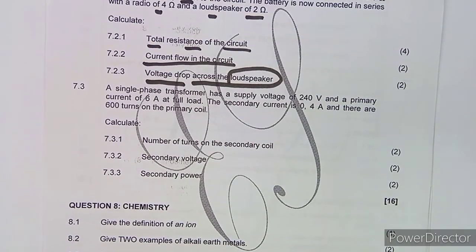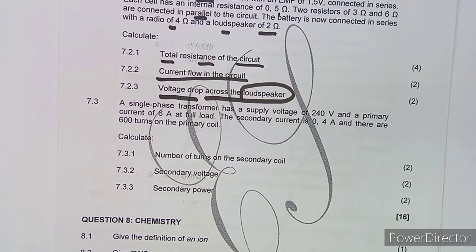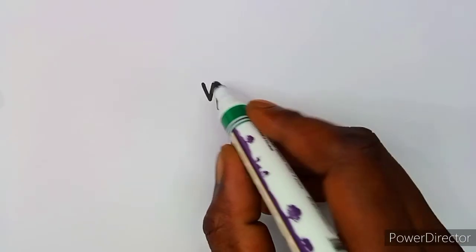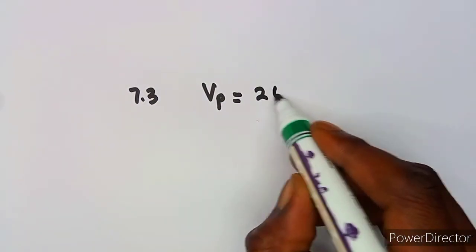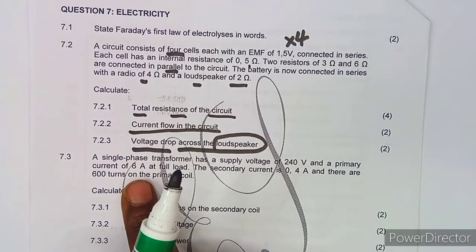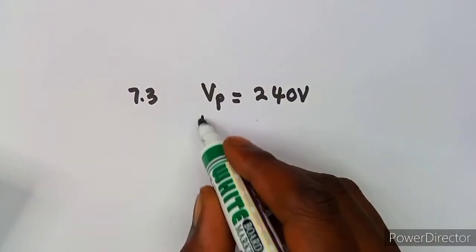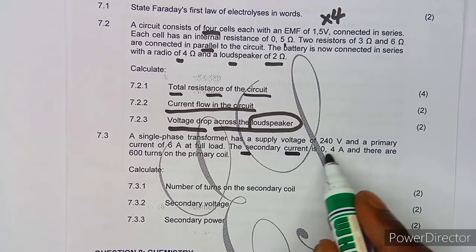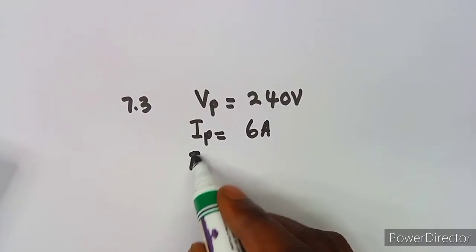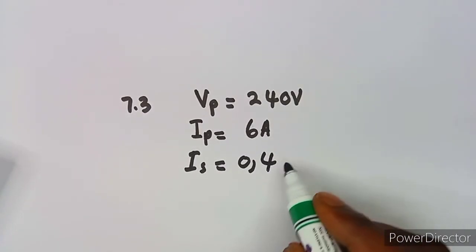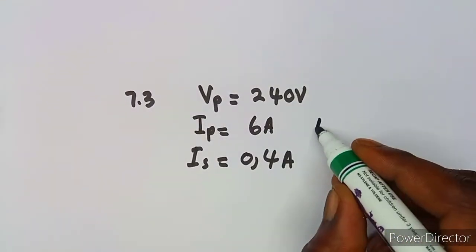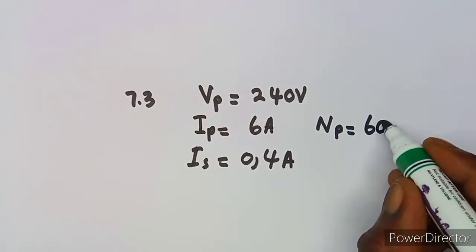A single-phase transformer has a supply voltage of 240 volts and a primary current of 6 amps at full load. The primary voltage is 240 volts. The primary current is 6 amps. The secondary current is 0.4 amps. There are 600 turns on the primary coil. The question asks us to calculate the number of turns on the secondary coil.